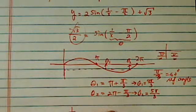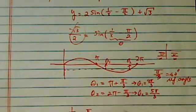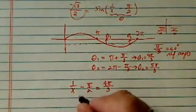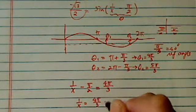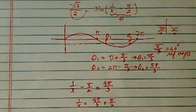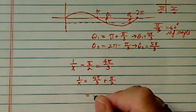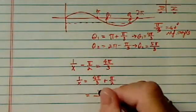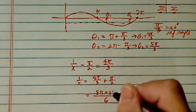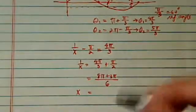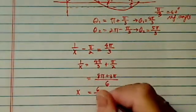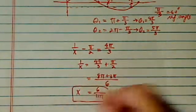Now we're going to go back and find x. So 1 over x minus pi over 2 equals theta 1, which is 4 pi over 3. We solve for x by adding pi over 2. Simplifying with a common denominator of 6, we get 8 pi plus 3 pi. So 1 over x equals 11 pi over 6, meaning x1 equals 6 over 11 pi.